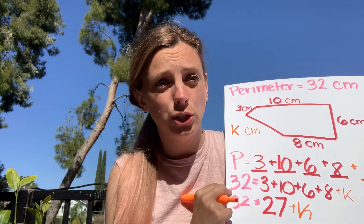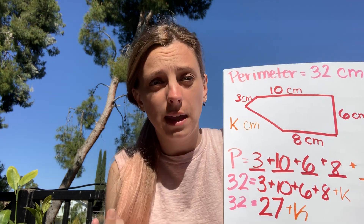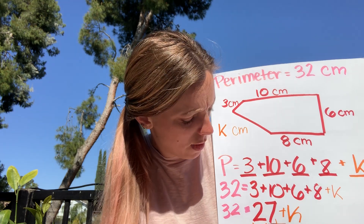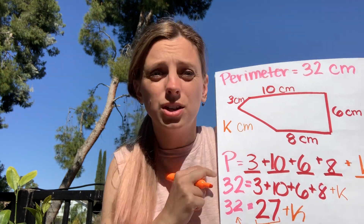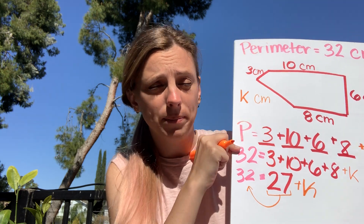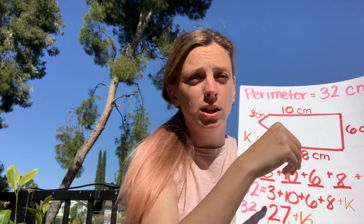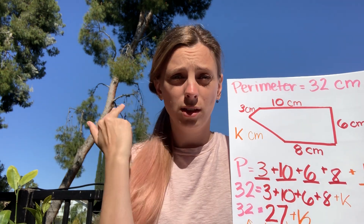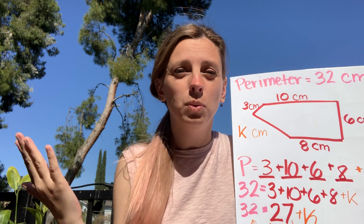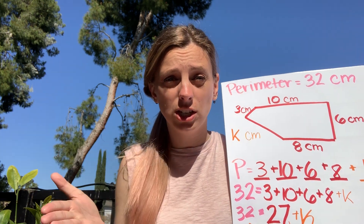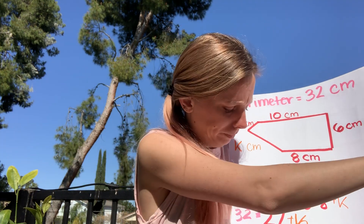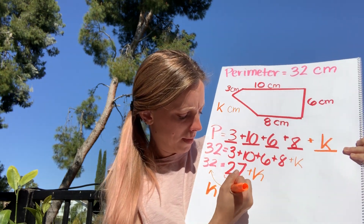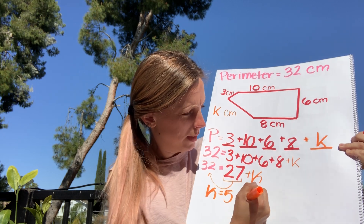Now I'm ready to use one of my strategies. Using the count-up strategy, I count from 27 to 32 — 28, 29, 30, 31, 32. How many more centimeters did I need to get from 27 to 32? I would need five more centimeters. So K equals five centimeters.